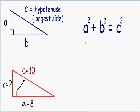Our a is equal to 8, so instead of writing a², I'm going to put 8² + b². We don't know our b yet, so I'm just going to leave it as b². This is all equal to c², and our c is equal to 10, so instead of c² I'm going to write 10².